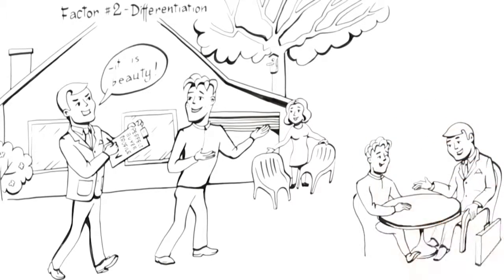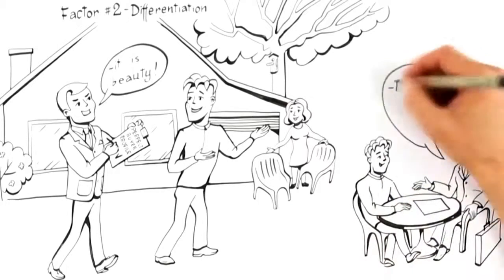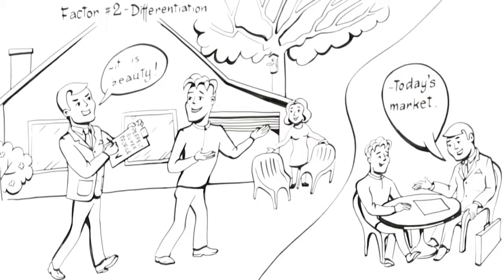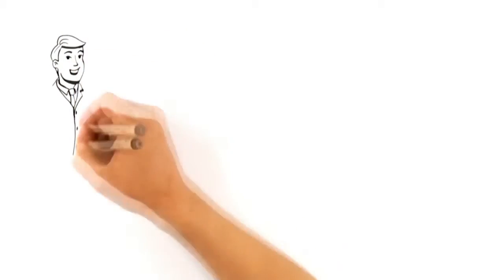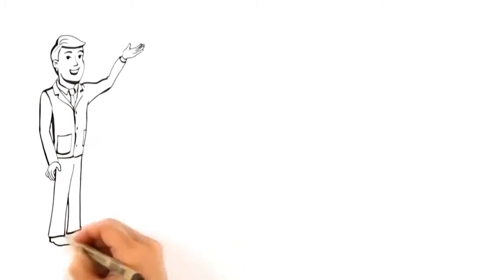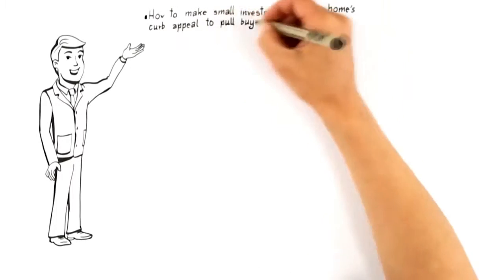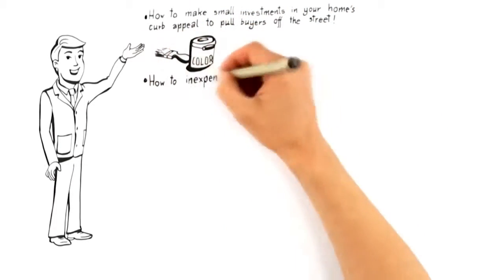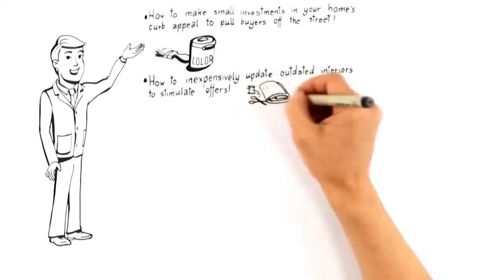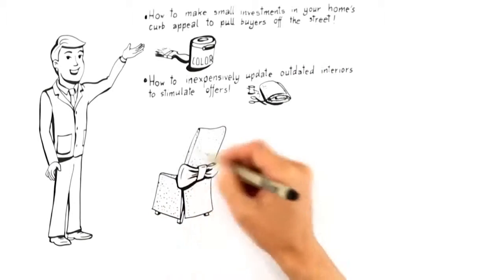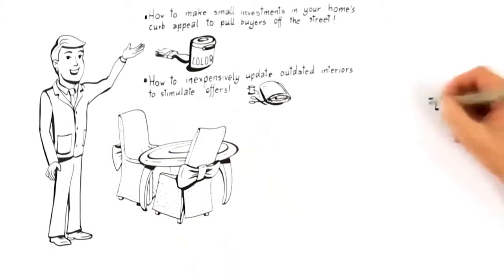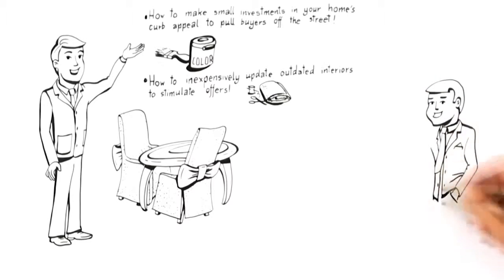As you'll notice, the key focus here is not on past market sales, but what is likely to attract a top paying buyer in today's market. This means the advice you should receive to attract buyers like this must include how to make small investments in your home's curb appeal to pull buyers off the street, how to inexpensively update outdated interiors to stimulate offers, how to use pre-emptive negotiation strategies to attract high offers in comparison to your competition.